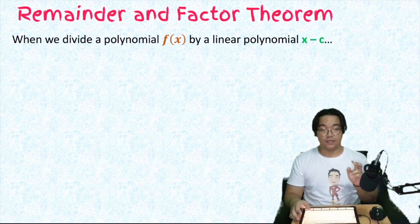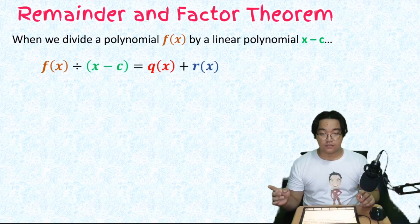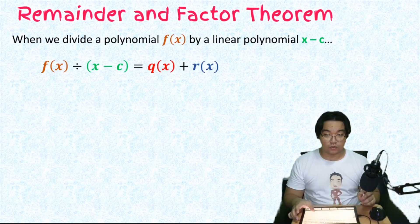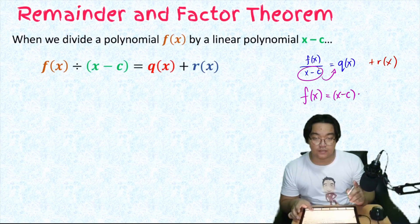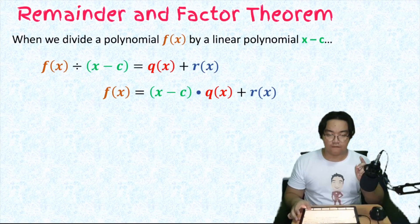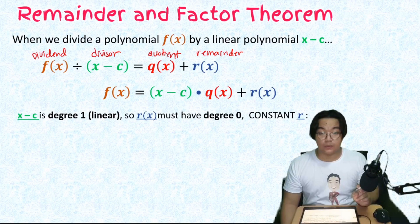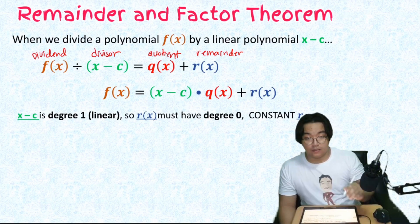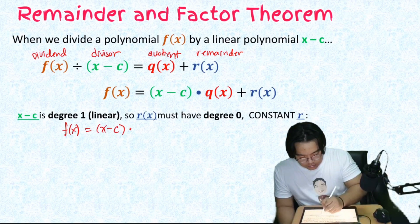So when we divide the polynomial f(x) by a linear polynomial x minus c, we have the division algorithm: f(x) divided by (x minus c) equals the quotient plus the remainder. If we multiply both sides by (x minus c), we obtain that f(x) equals the divisor (x minus c) times the quotient plus the remainder. Since (x minus c) is degree one, the remainder r(x) must have degree zero — a constant r. So f(x) = (x minus c)·q(x) + r.